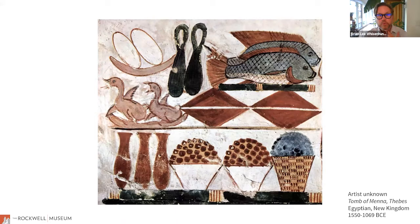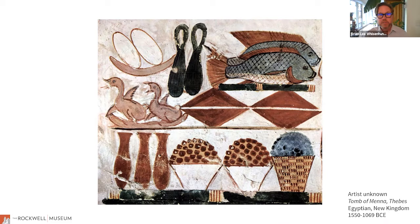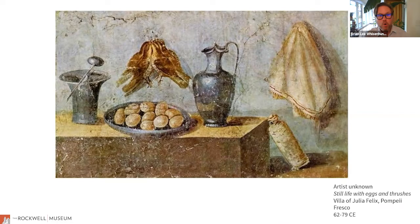This is a painting from the Tomb of Mena in Thebes, from the Egyptian New Kingdom, dating from 1550 to 1069 BCE — one of the earliest examples of still life. Still life painting is a very old tradition, employed for a variety of reasons for thousands of years. In this case it contains fish, fowl, baskets of fruit, wine, and loaves of bread, included alongside real objects in tombs to provide virtual sustenance in the afterlife.